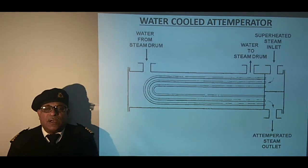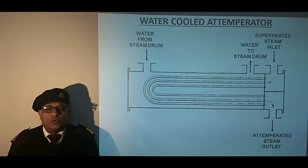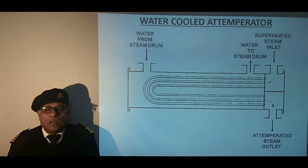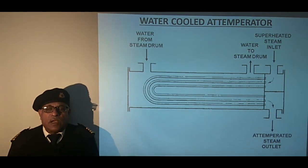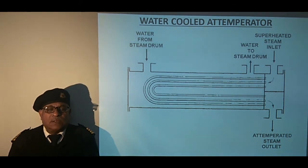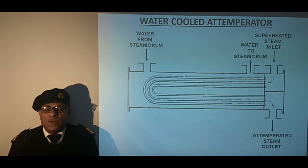This attemperator is of shell and tube type, in which U-tubes are attached to the header which has steam inlet and outlet connections. The cylindrical shell has water inlet and outlet connections from the steam drum. The incoming water gets heated by the steam passing through the U-tubes. The temperature difference at the two ends causes the circulation of water through the steam drum, so this arrangement is used in some boilers.